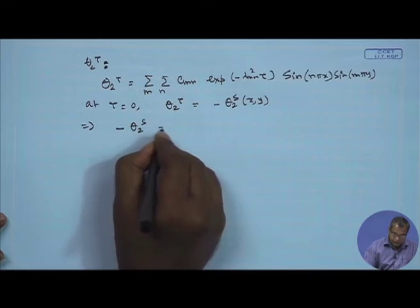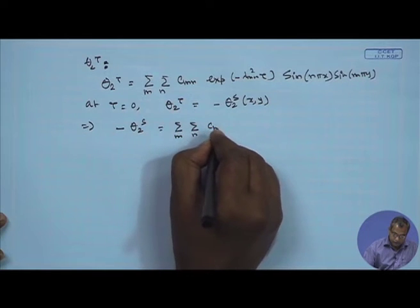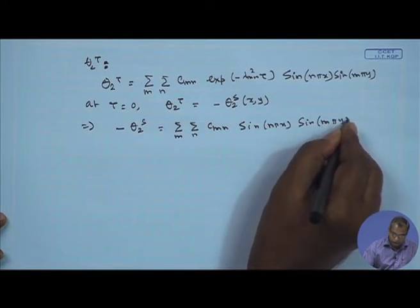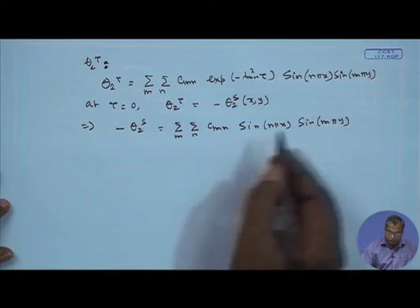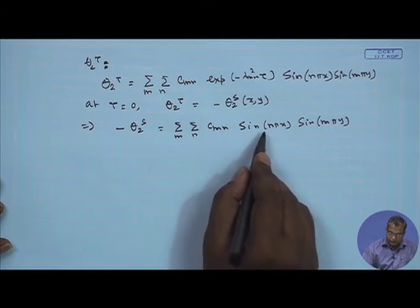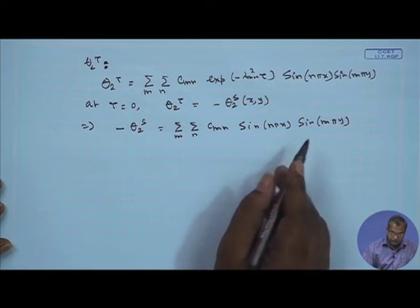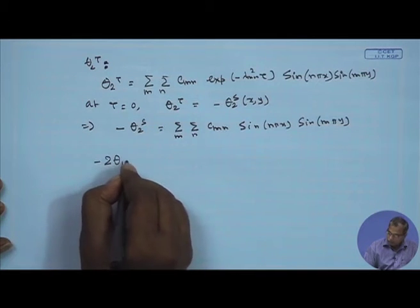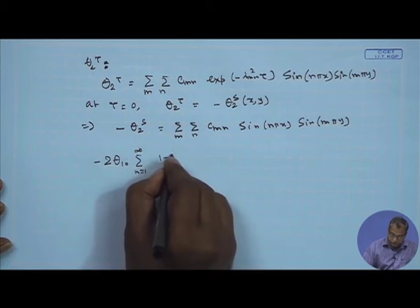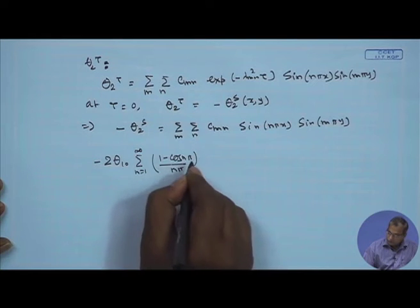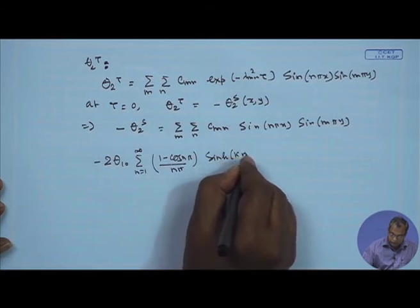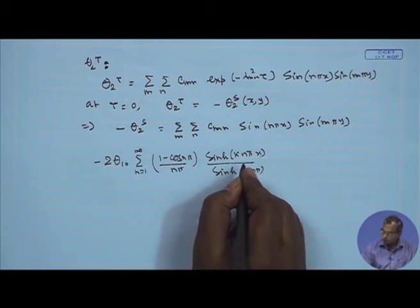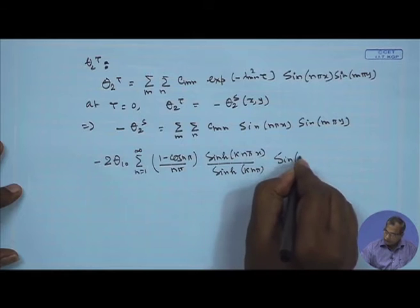Applying the initial condition, minus theta 2s equals the double summation over m and n of c_mn sin(nπx) sin(mπy). The constant c_mn will be evaluated using the orthogonality property of the sine functions and the eigenfunctions. The steady state solution theta 2s is: minus 2 theta_1_naught, summed from n=1 to infinity, of [(1 minus cos(nπ))/(nπ)] times [sinh(knπx)/sinh(knπ)] times sin(nπy).